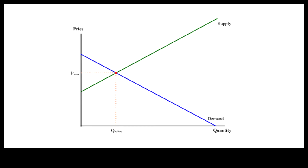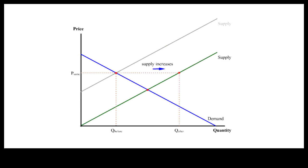When more is supplied at the same price, supply rather than quantity supplied is said to have increased. With demand remaining unchanged, an increase in supply will push down price. After the market clears, a larger quantity is sold at a lower price when supply increases.